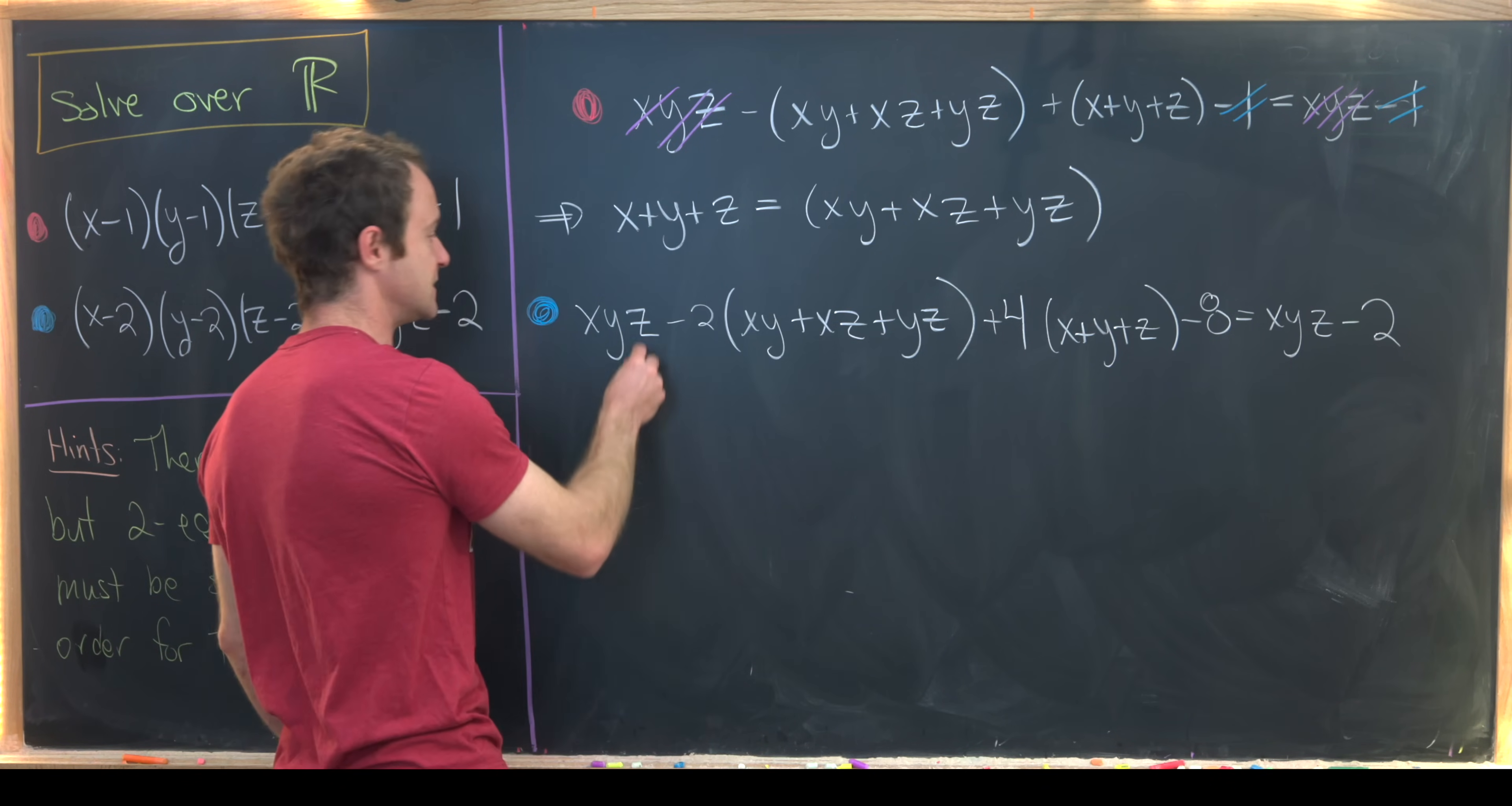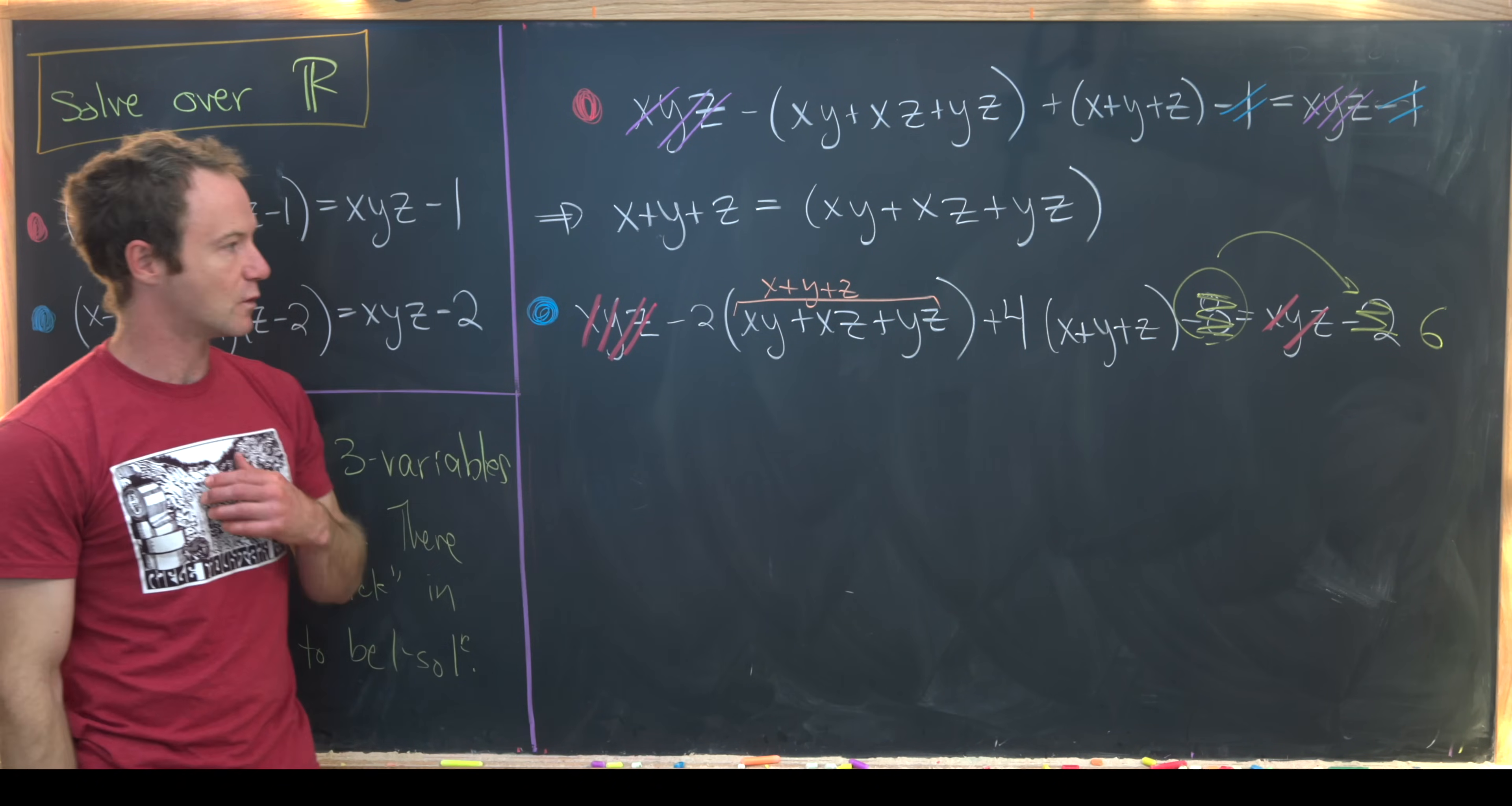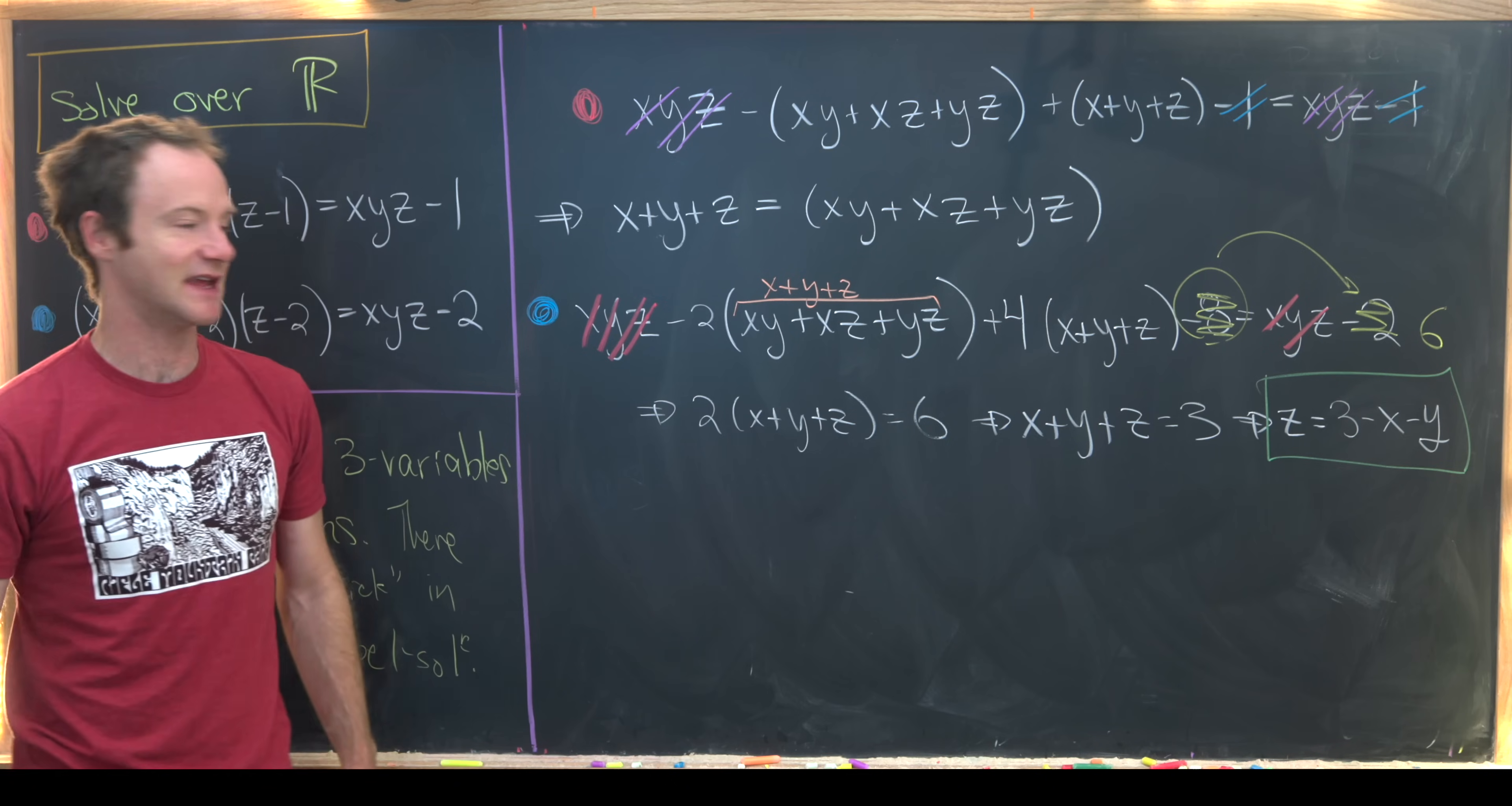Now let's start simplifying things. This xyz will cancel with this xyz. We can take this negative 8 and move it over, giving us 6. From here, we can take this quadratic thing and replace it with our linear thing from the red equation. We've got 4(x + y + z) - 2(x + y + z) = 6, so 2(x + y + z) = 6. That tells us x + y + z = 3, or z = 3 - x - y.